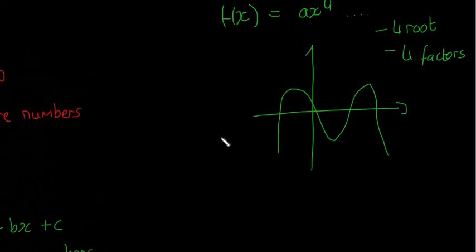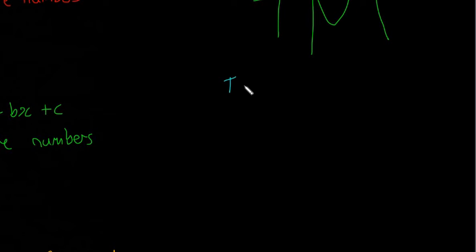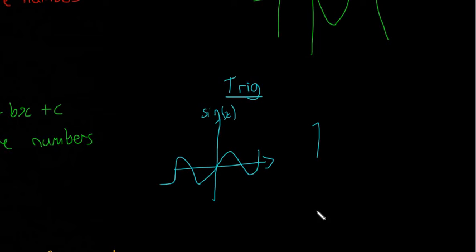Now we're going to look at trigonometric functions. Trigonometric functions - there's going to be a sine function that looks like that and keeps going on forever. It looks kind of like a cubic, but it stays the same and keeps going. That's sin(x). Then you're also going to have cos(x).